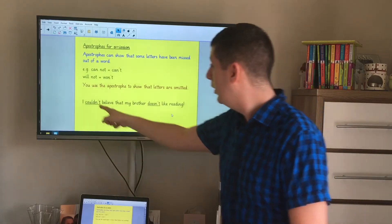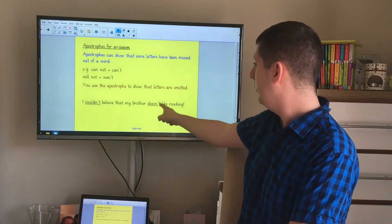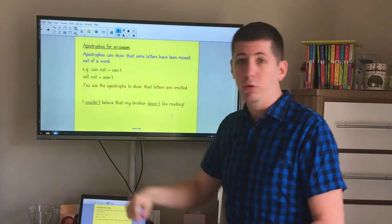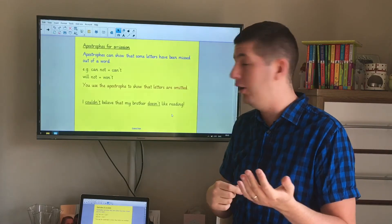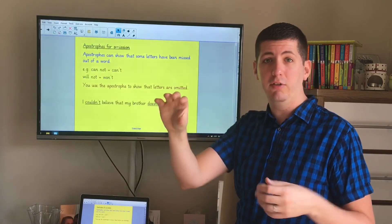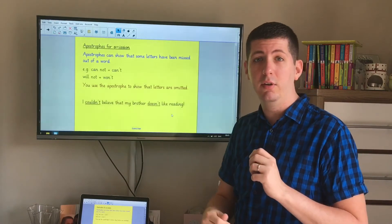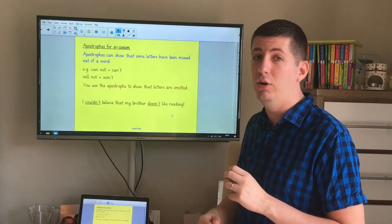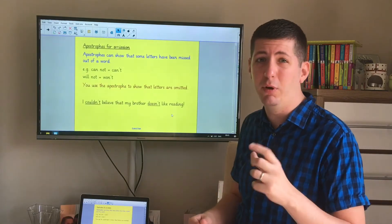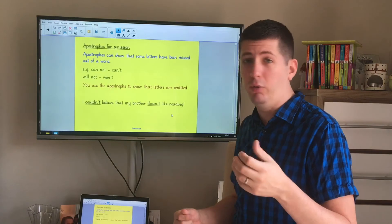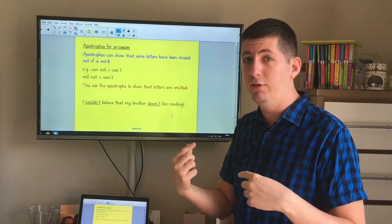Here are some examples. I couldn't believe that my brother doesn't like reading. Couldn't would be the words could and not pushed together, which again shows the apostrophe is missing the letter O, and doesn't is does and not pushed together. Again the apostrophe shows that the letter O is missing in not. There are other types of contractions as well, those words with apostrophes in which don't involve the word not. We'll have a look at some later on in our lesson today.